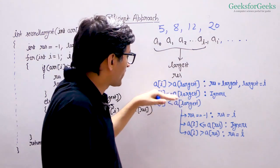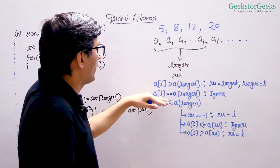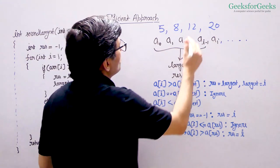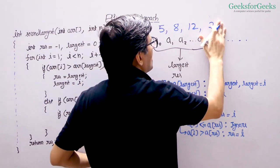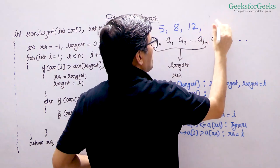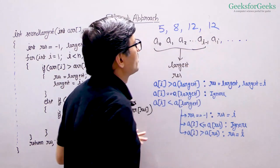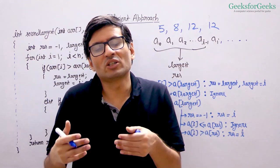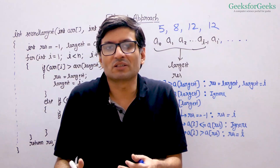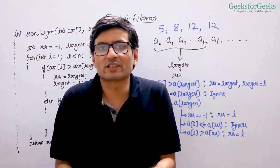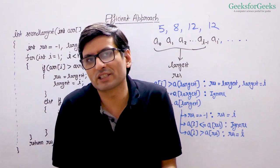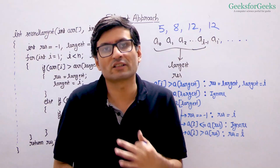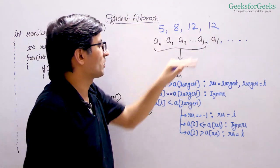The second case is when a[i] is equal to the largest. Suppose the elements so far had 12 as the largest and you now see 12 again. You simply ignore this element because a new element equal to the existing largest is not going to change the largest or the second largest.